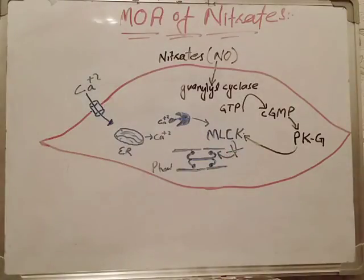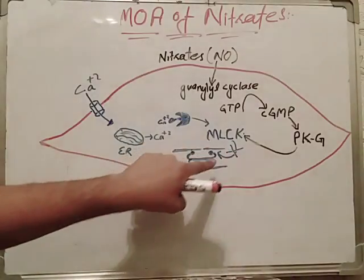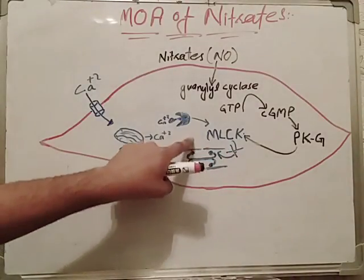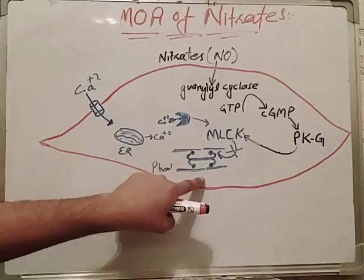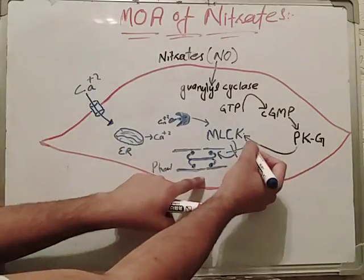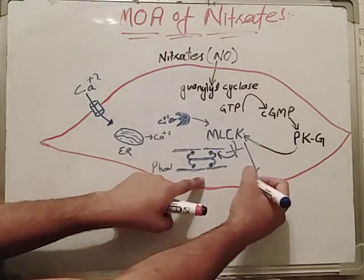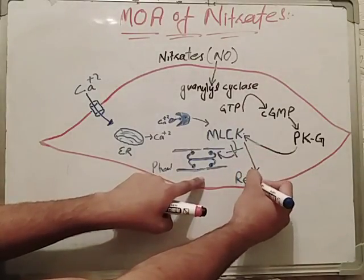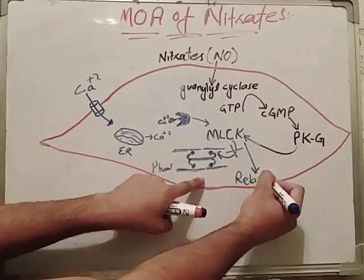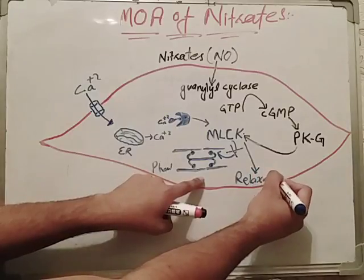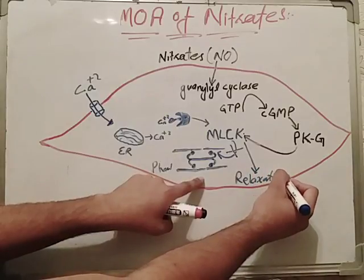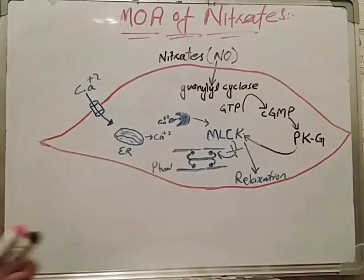Once this pathway is stopped, the myosin light chain cannot be phosphorylated and contraction does not occur. As a result, the smooth muscle undergoes relaxation, which leads to vasodilation.